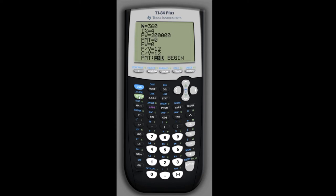We'll solve for PMT, hit alpha, enter, and the monthly payment under the 4% interest loan is about $955.